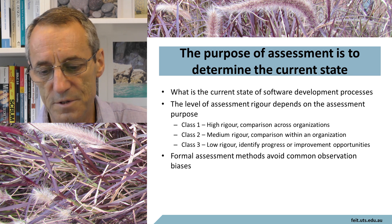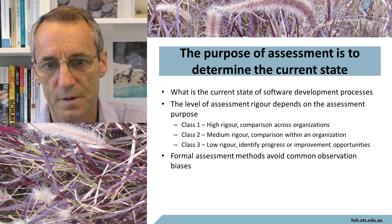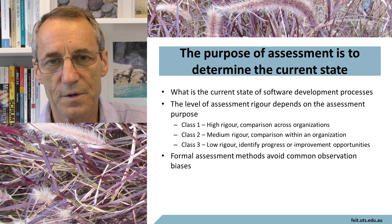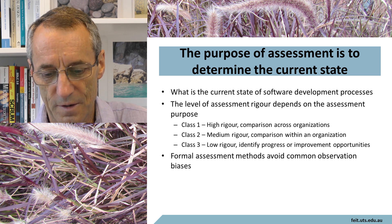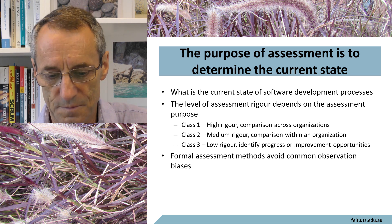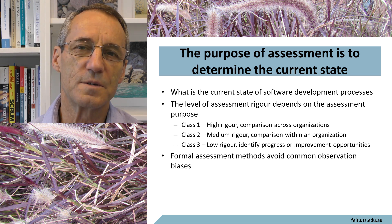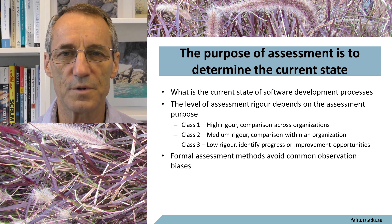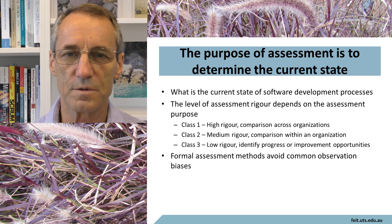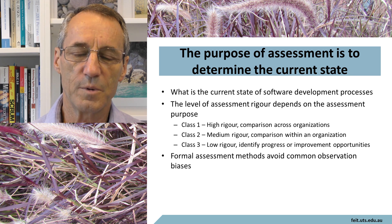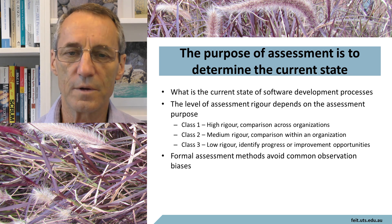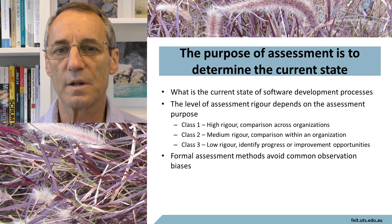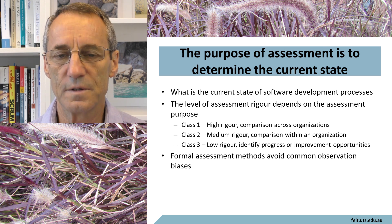The level of assessment rigor depends on the assessment purpose. A class one assessment is very high rigor, used for comparison across organizations. You would do a class one if there was some legal context to it — for example, if you're assessing an organization and depending on that assessment, they will or will not be awarded a contract. In those circumstances there's quite a lot riding on the result and it needs to be very clearly done and highly rigorous.